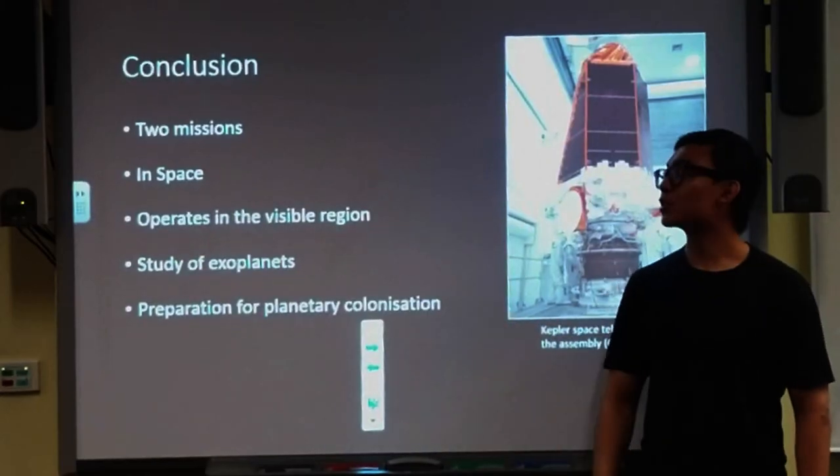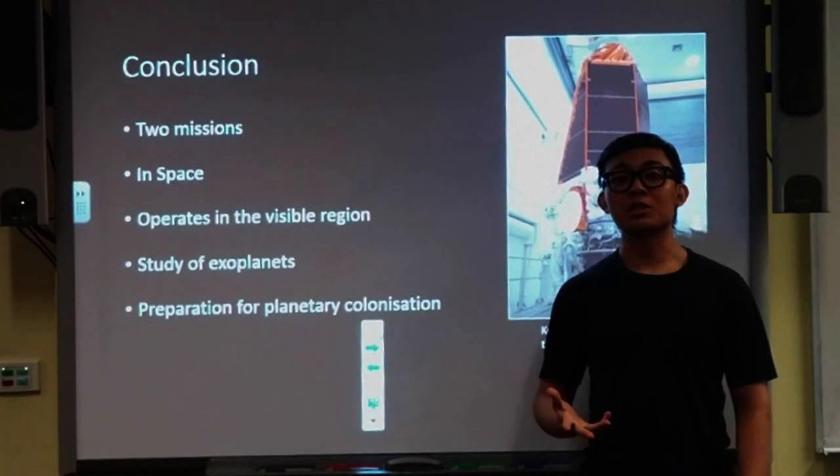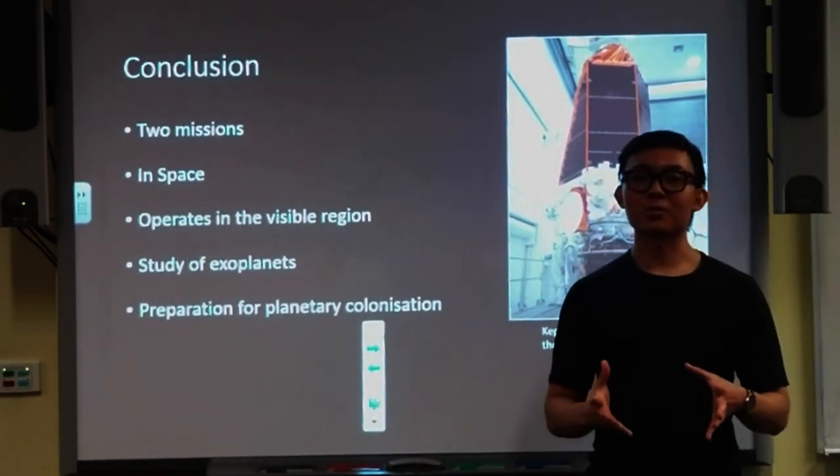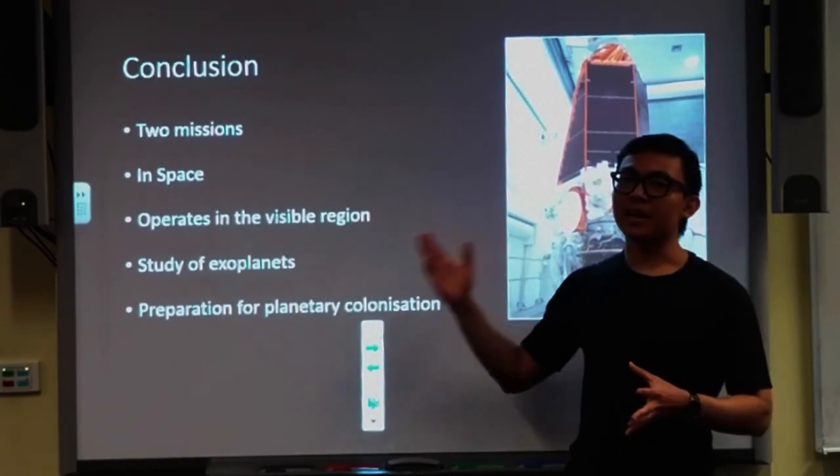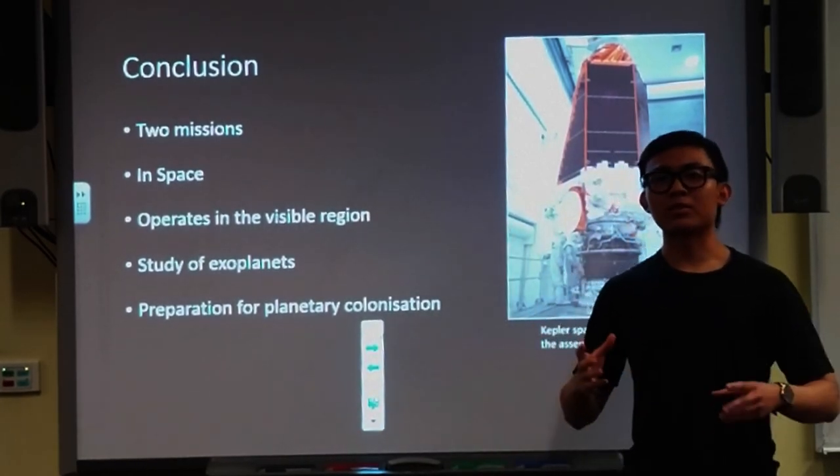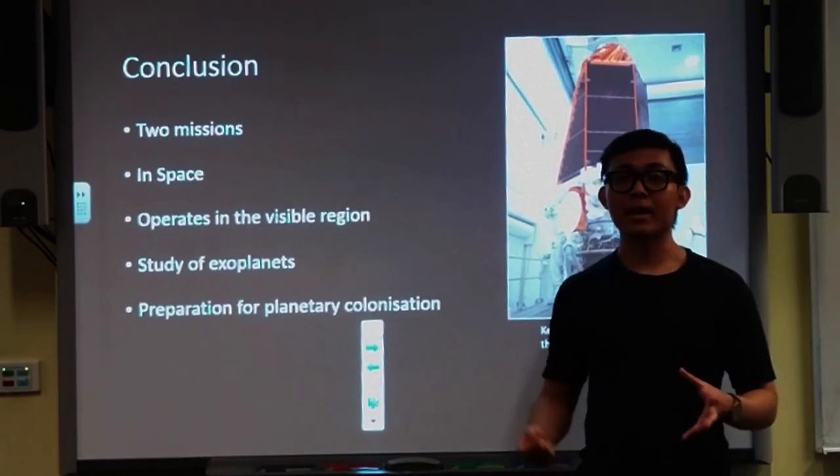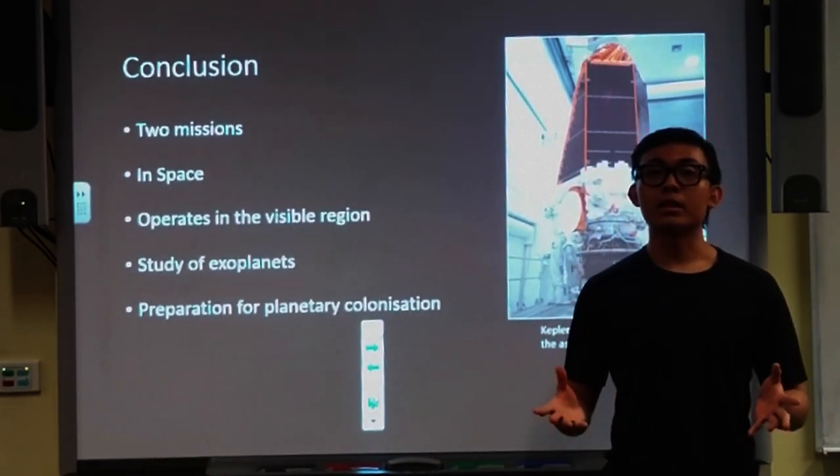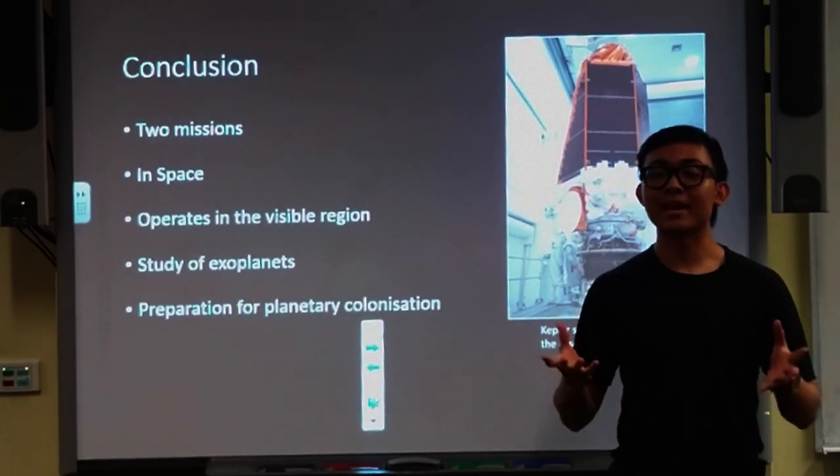To sum up, the Kepler telescope completed two missions in space operating in the visible region of the electromagnetic spectrum. During its lifetime, the telescope discovered thousands of exoplanets. And on top of that, with a growing endeavor for planetary colonization, the telescope prepares us for that. Thank you.